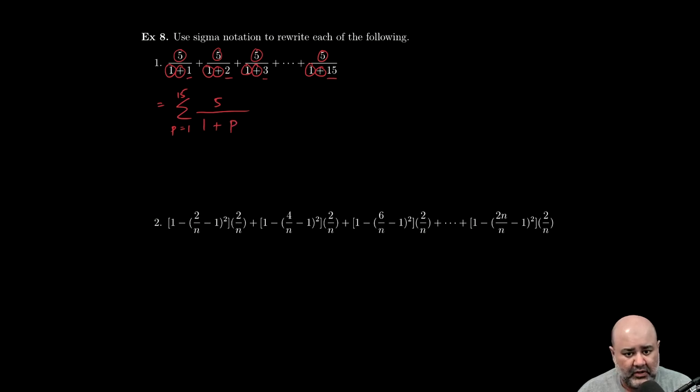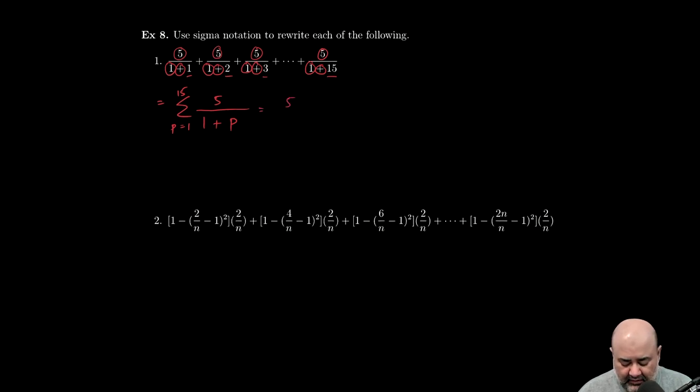Now let's verify, make sure that our closed form actually works. This is just doing a sanity check. If we plug in p equals 1, I'm going to get 5 over 1 plus 1, and then my counter for p moves from 1 to 2, then I plug in 2, I'm going to get 5 over 1 plus 2, then the counter moves to 3, 5 over 1 plus 3.